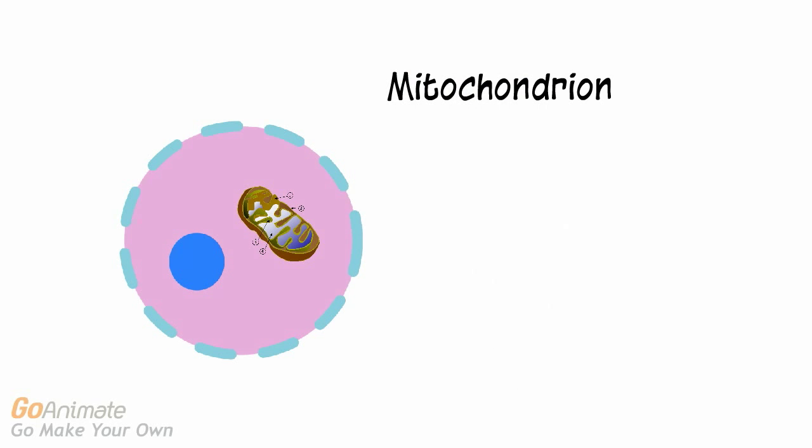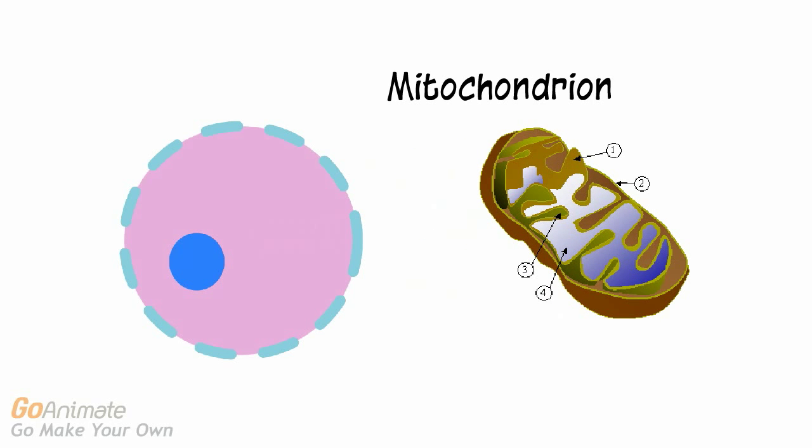The electron transport chain is located in the mitochondrion, specifically in the inner membrane.